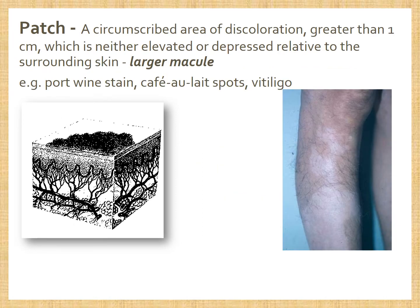A patch is a circumscribed area of discoloration greater than 1 cm, either elevated or depressed relative to the surrounding skin — in effect, a larger macule. Examples include port wine stains, café au lait spots, and vitiligo, as seen in the image.